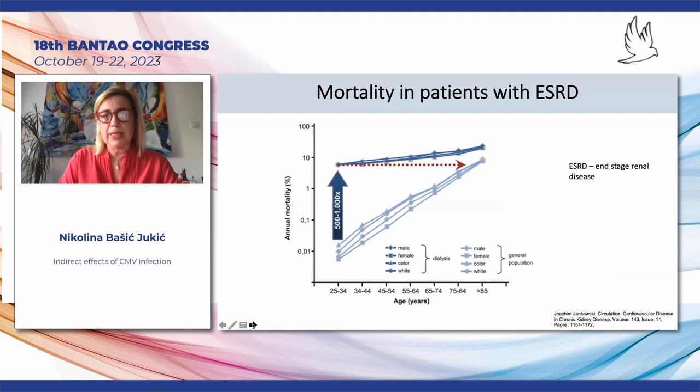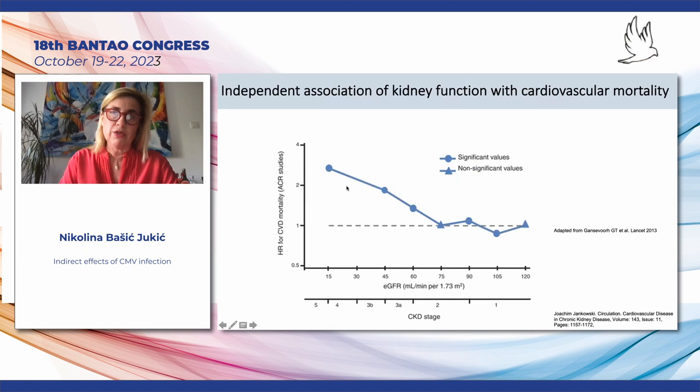When we look at mortality in patients with end-stage renal disease, it is much higher than in the general population. The mortality risk of really young patients with end-stage kidney failure equals the risk of an elderly person from the general population.